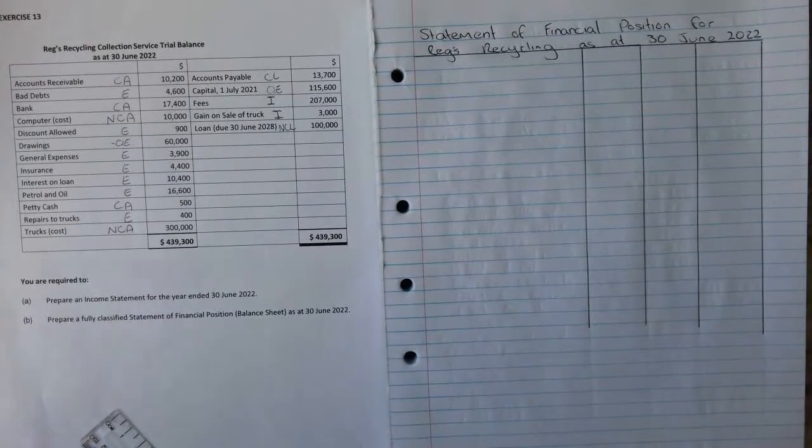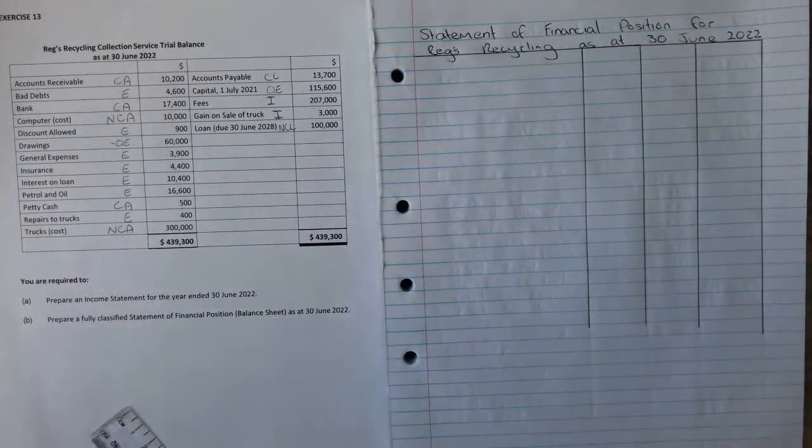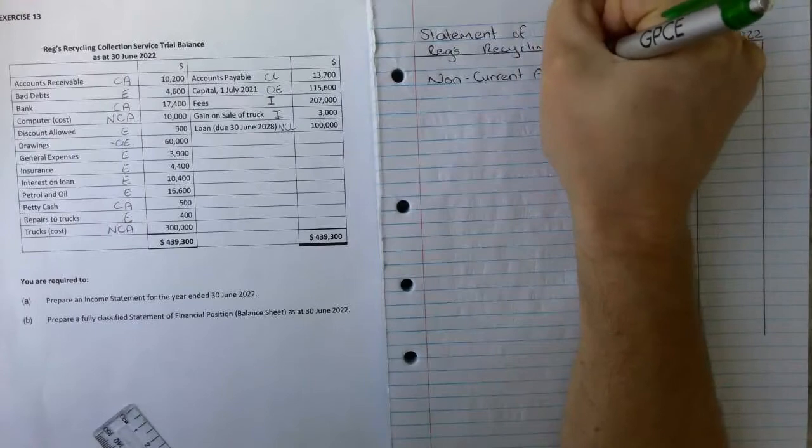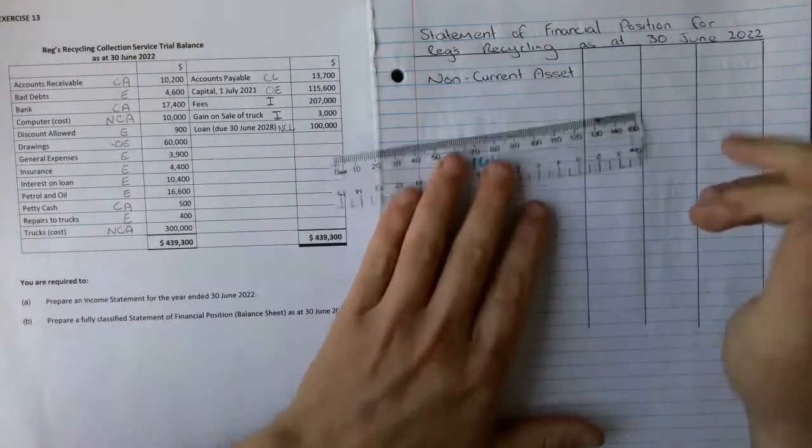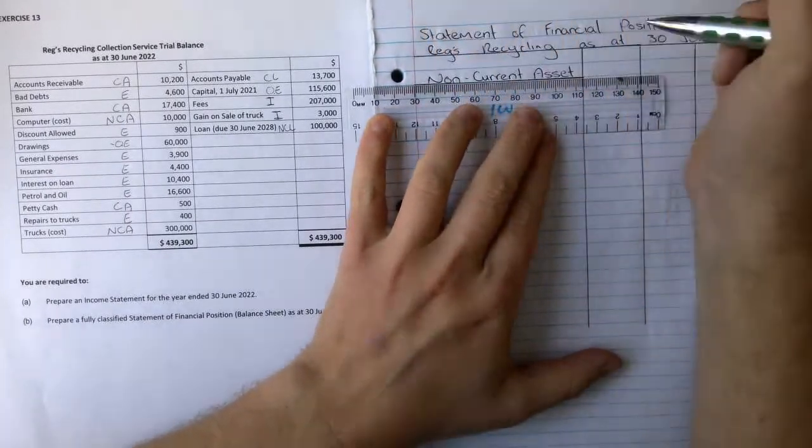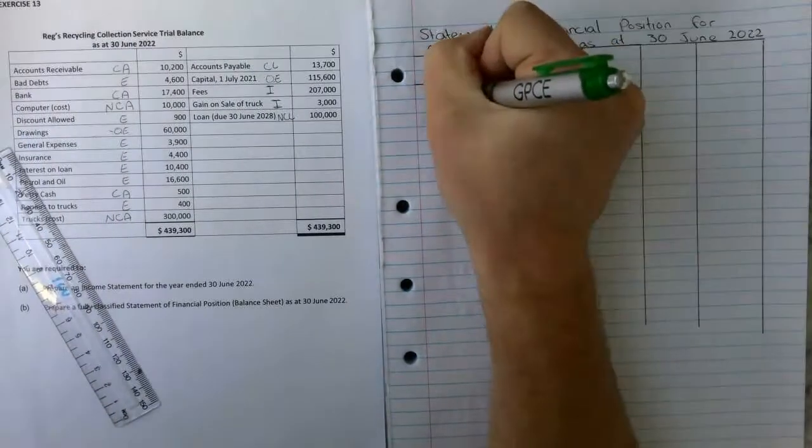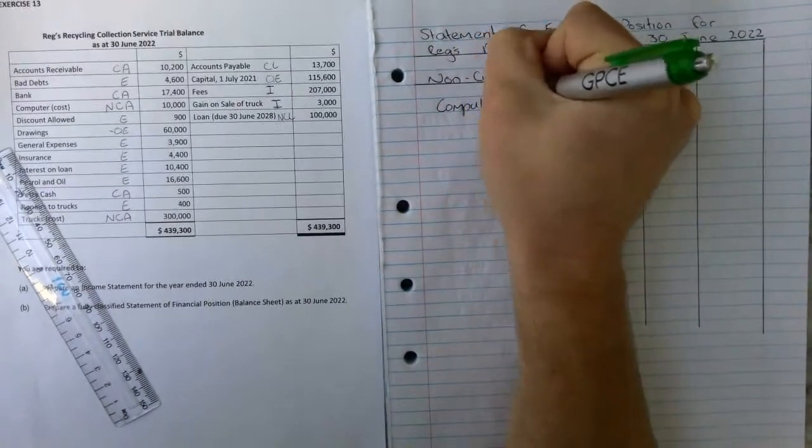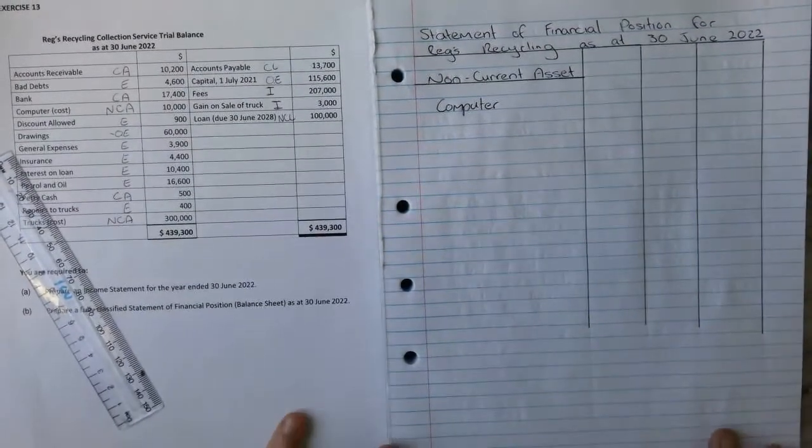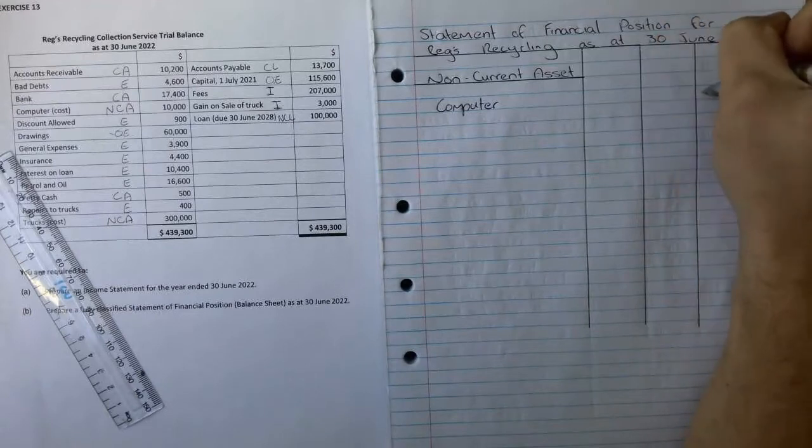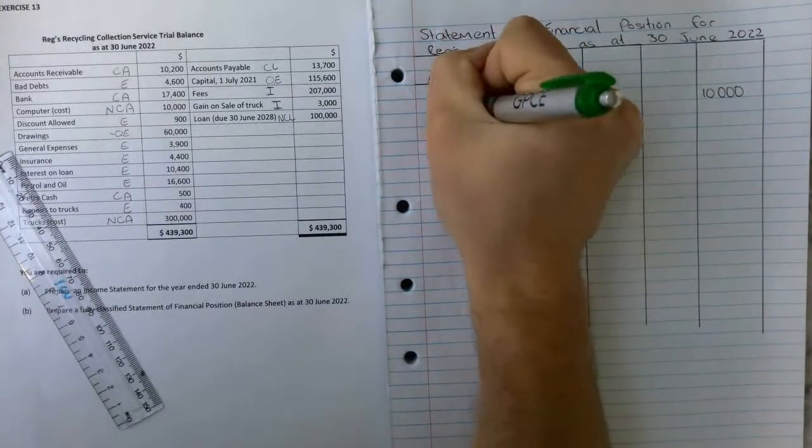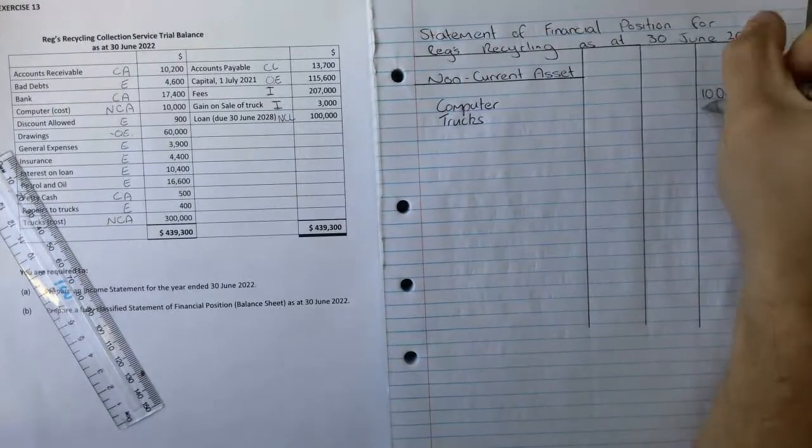What we start with always in a balance sheet or a statement of financial position is non-current assets. So this is a title again, so we can underline that. The non-current assets, we've actually got two of them in this example. We have computer. Just remember non-current assets are ones we're not going to really buy year to year, so they're more longer than a year. That's going to be $10,000 into the non-current asset account.